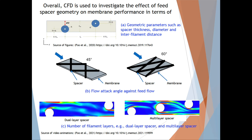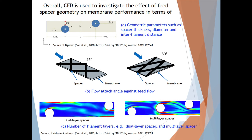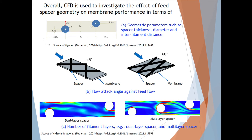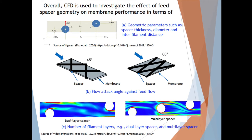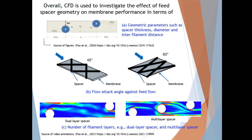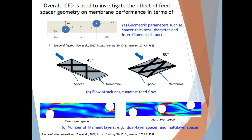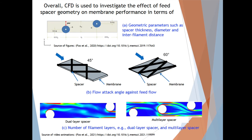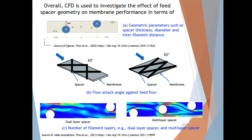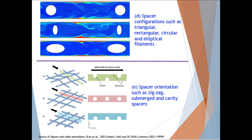Overall, CFD is used to investigate the effect of feed spacer geometry on membrane performance in terms of: A) geometric parameters such as spacer thickness, diameter, and inter-filament distance; B) flow attack angle against feed flow; C) number of filament layers, for example dual-layer spacer and multi-layer spacer; D) spacer configurations such as triangular, rectangular, circular, and elliptical filaments; and lastly, spacer orientation, like zigzag, submerged, as well as cavity spacers.